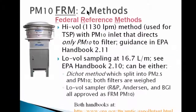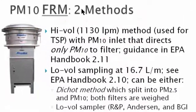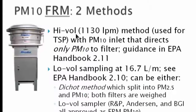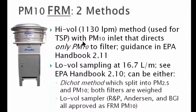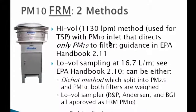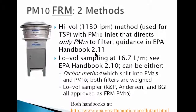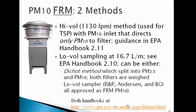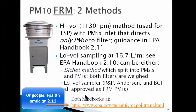There are two common methods — two methods in general, with a lot of different instrument manufacturers — but they fall into two categories. High volume samplers sample at a higher volume. People are still monitoring for total suspended particulates, and you use a PM10 inlet that directs only PM10 to the filter. EPA has a really nice handbook 2.11, as well as another handbook for low-vol sampling at 16.7 liters per minute. These are available at the EPA website.